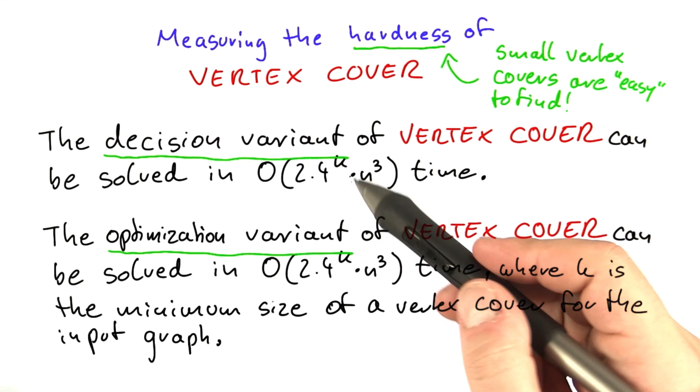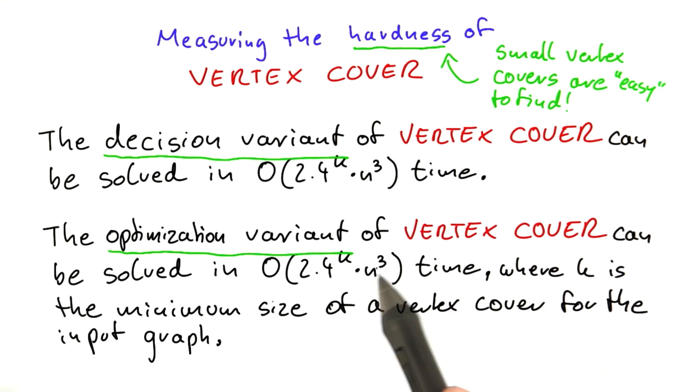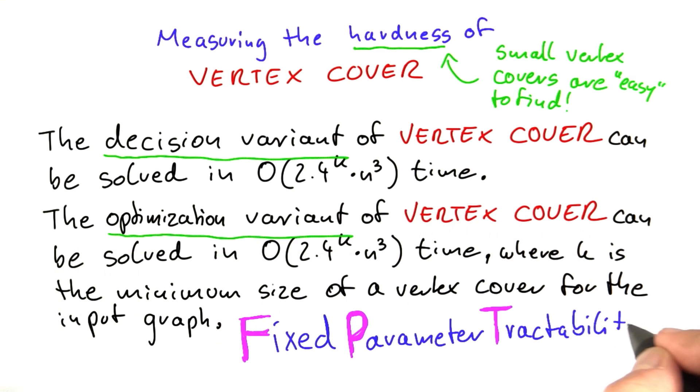For any fixed k, so either in the decision variant we fix k, or we say we look at all graphs that have a vertex cover of size 10 or 20 or 30, we can solve this NP-complete problem in polynomial time. This is a concept known as fixed parameter tractability.